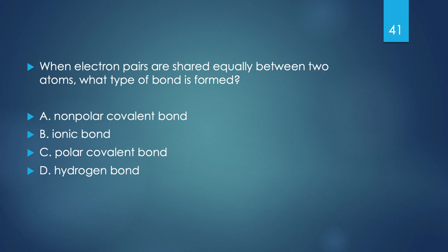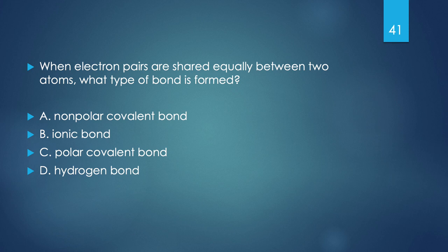Pop quiz: when electron pairs are shared equally between two atoms, what type of bond is formed? The key word is 'equally.' We can rule out hydrogen and ionic bonds. Of the two covalent options, polar covalent bonds do not share equally. So the answer is A — nonpolar covalent bonds.